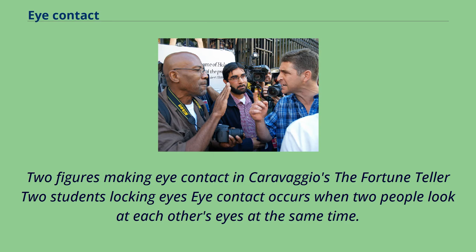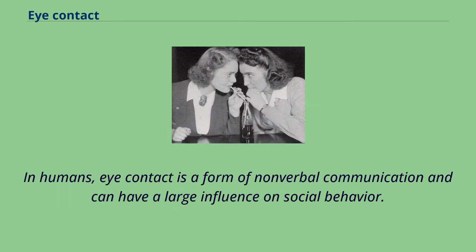Eye contact occurs when two people look at each other's eyes at the same time. In humans, eye contact is a form of non-verbal communication and can have a large influence on social behavior.